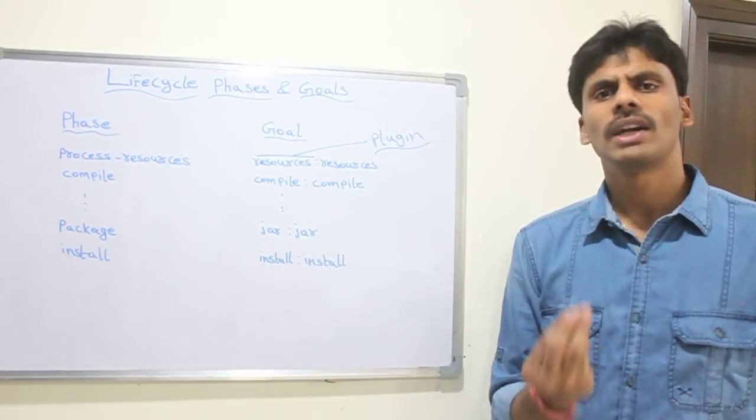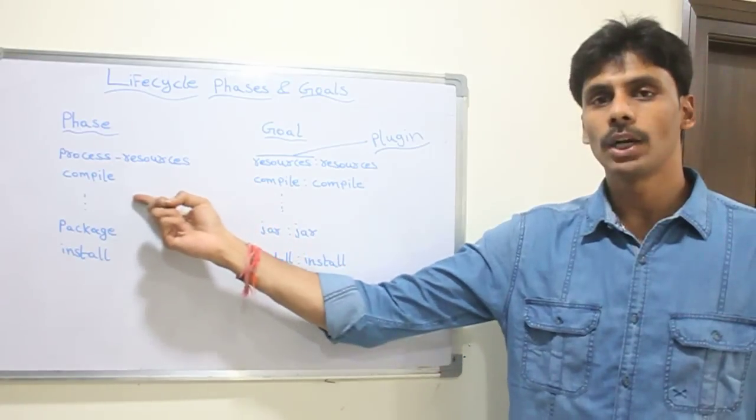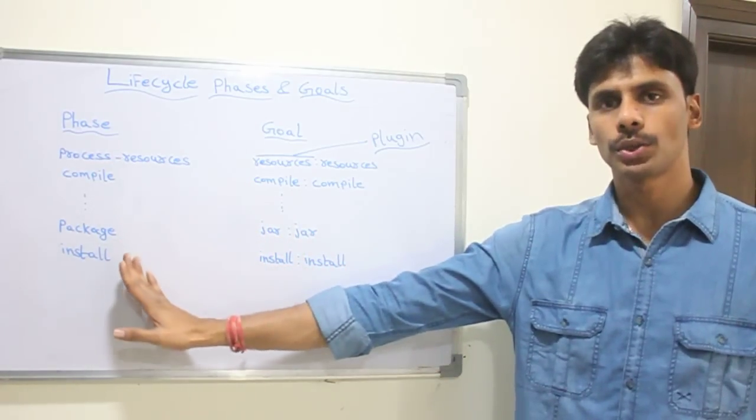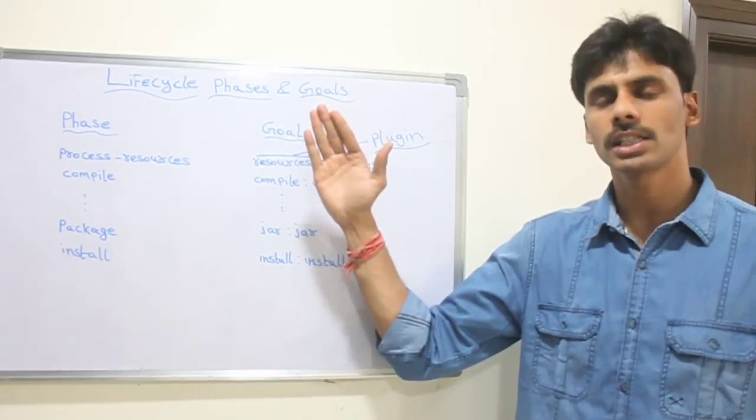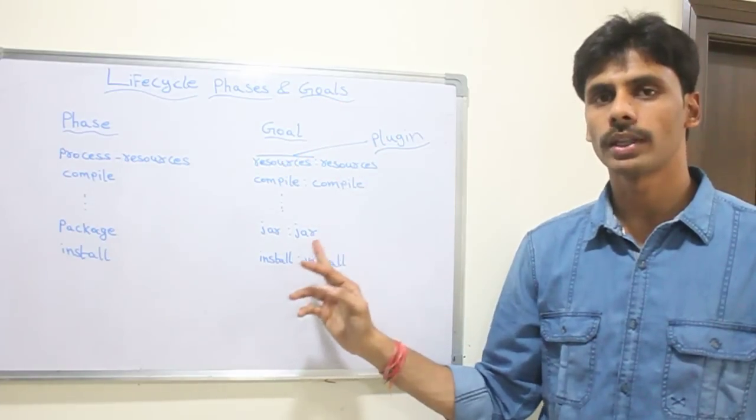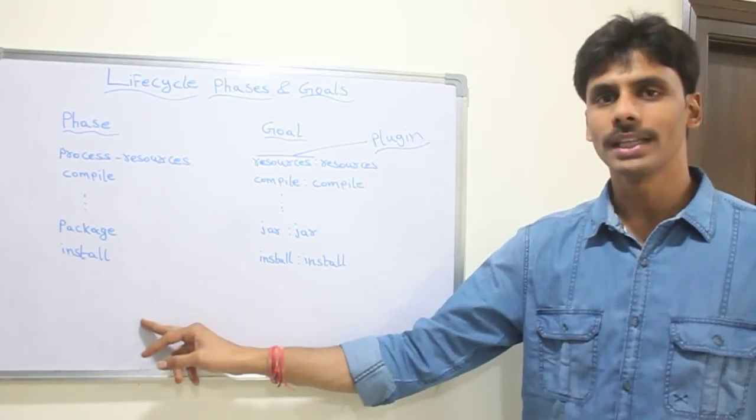And goals are individual tasks that are usually binded to phases. You can either execute a phase or a goal. No matter what you do, maven is going to execute all the phases before that phase or before that phase to which the goal is bound.